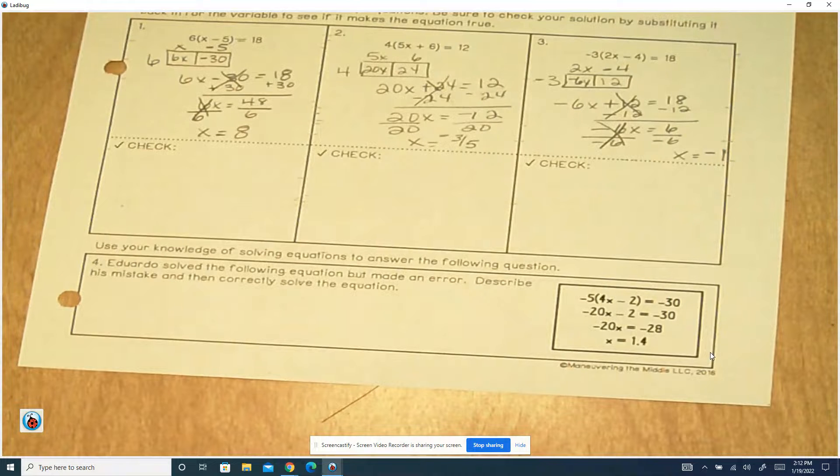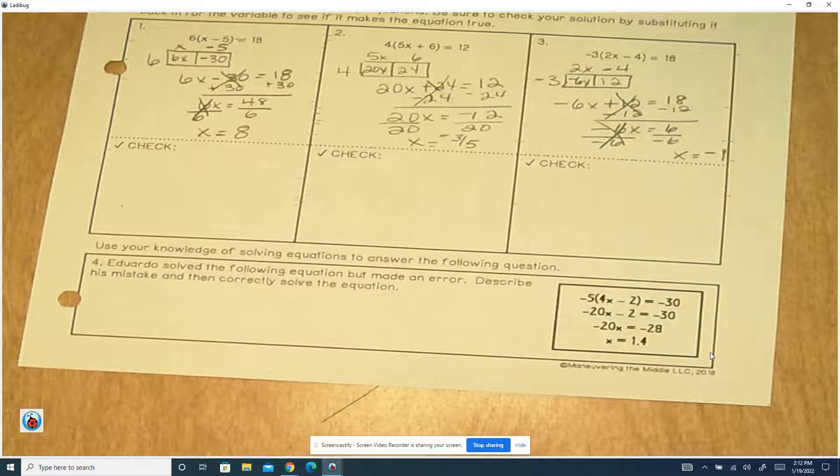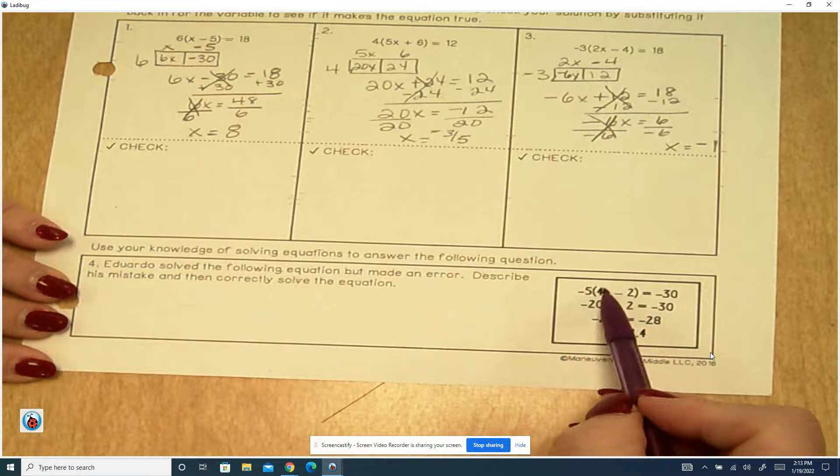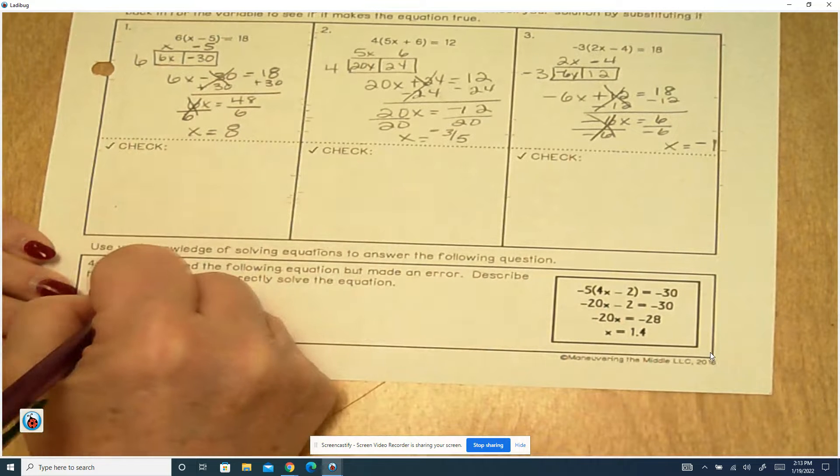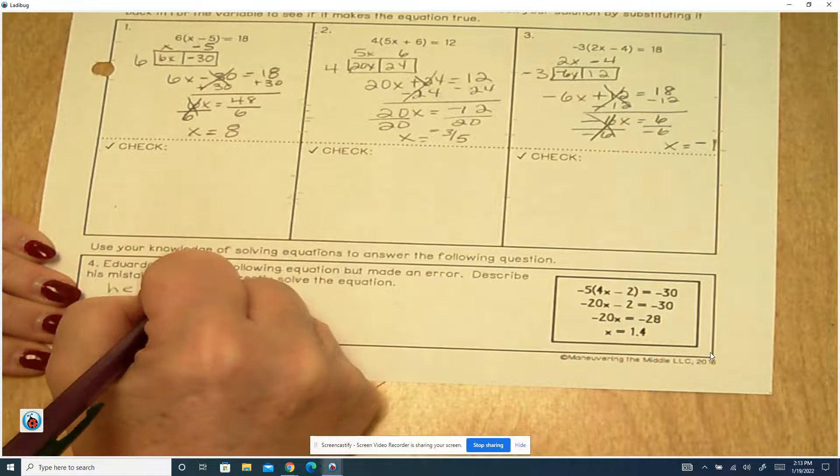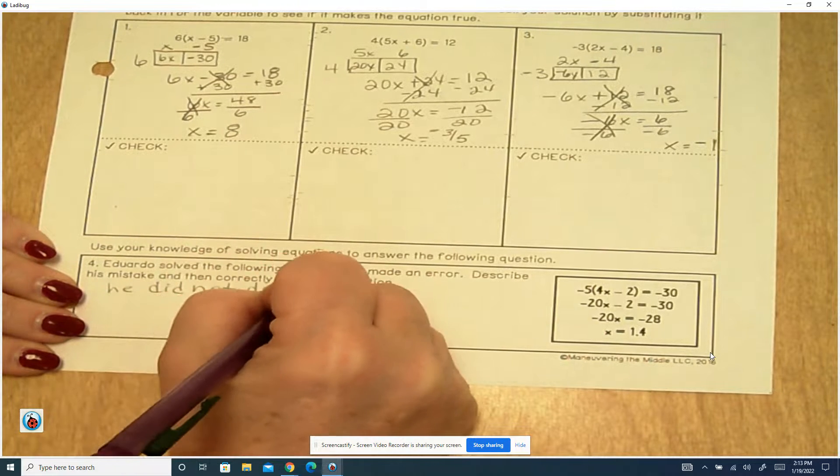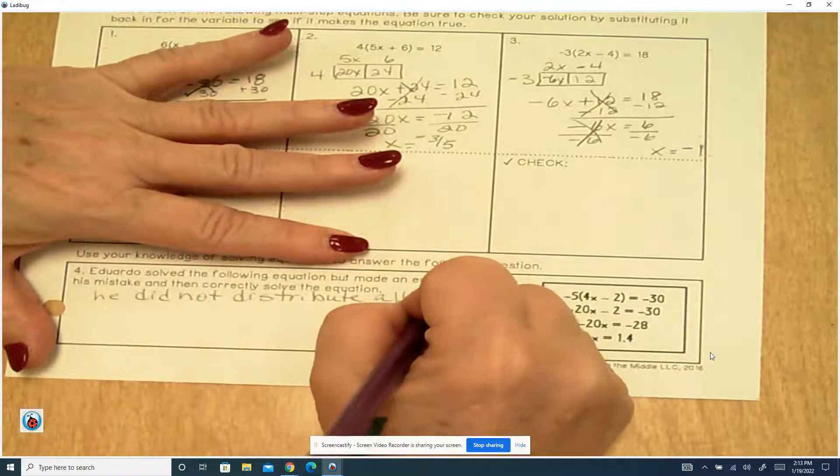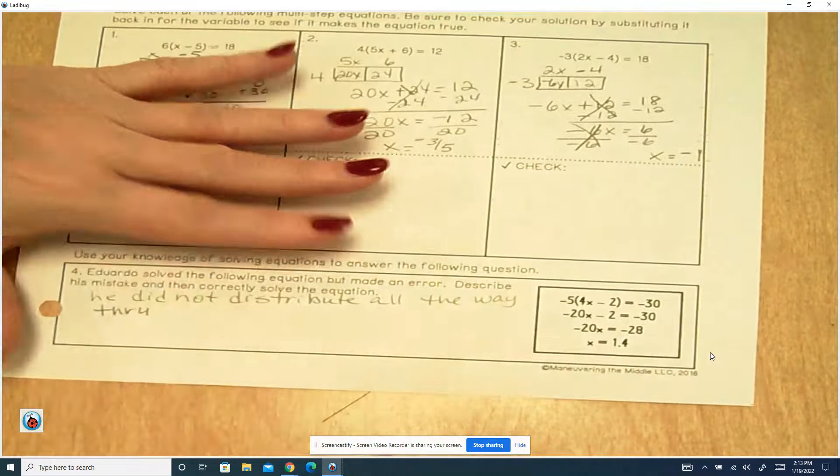This says, use your knowledge of solving equations to answer the following question. Eduardo solved the following equation but made an error to describe his mistake. So if we look here, 5 times 4 is 20. Eduardo, he did not distribute all the way through.